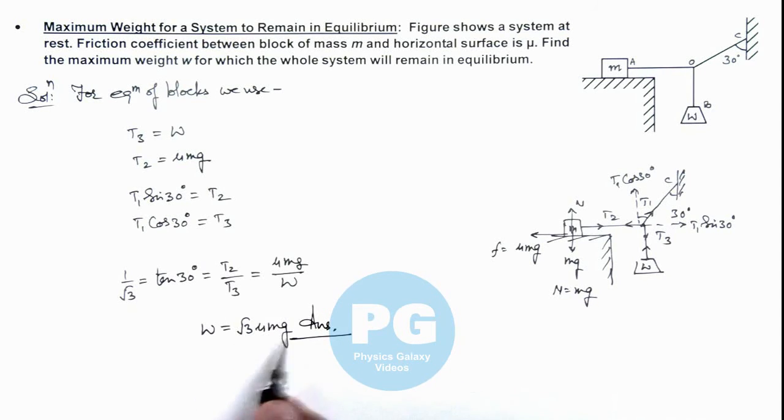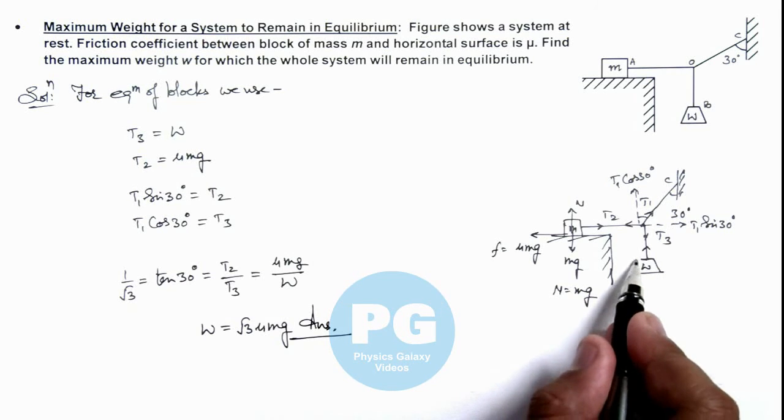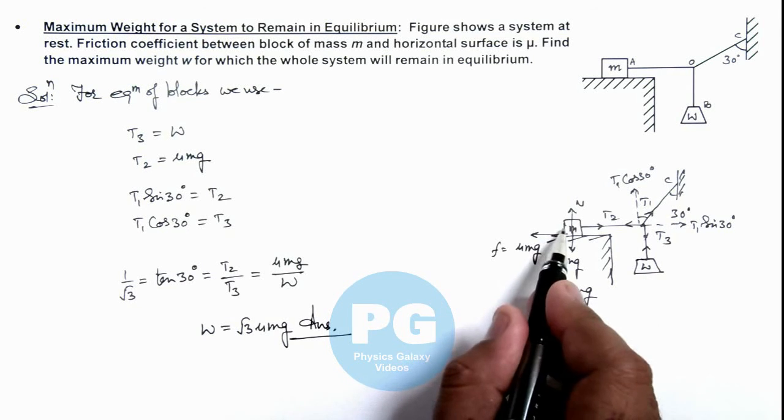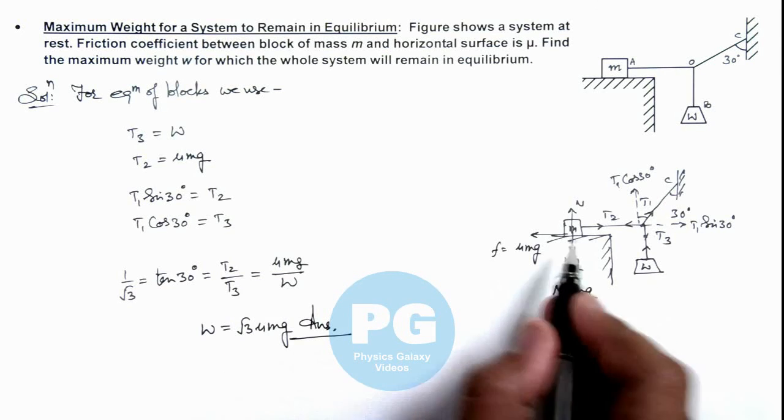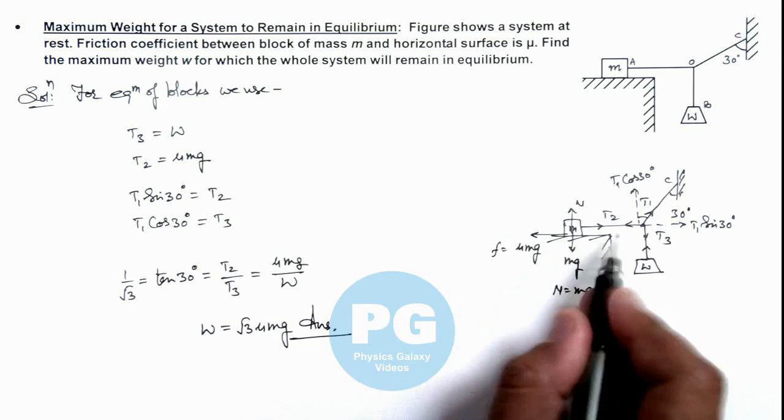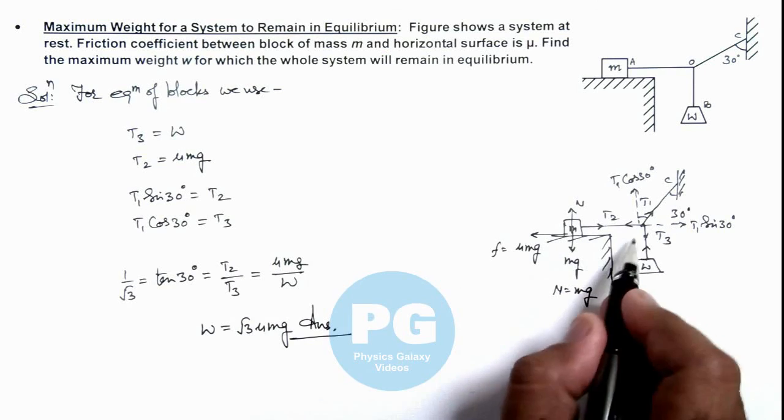As this is the maximum weight which can be suspended over here for which the block of mass m will be in equilibrium. If we exceed the value of w beyond root 3 mu mg, the friction will have a tendency to exceed, or t2 will exceed this mu mg, and block m will slide.